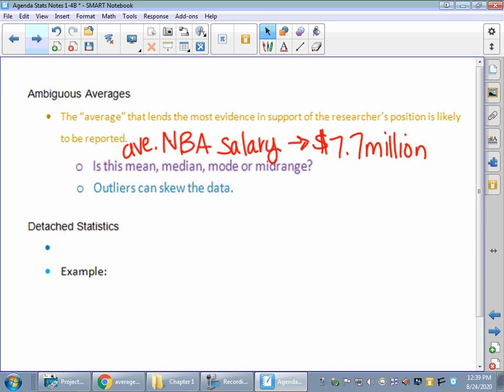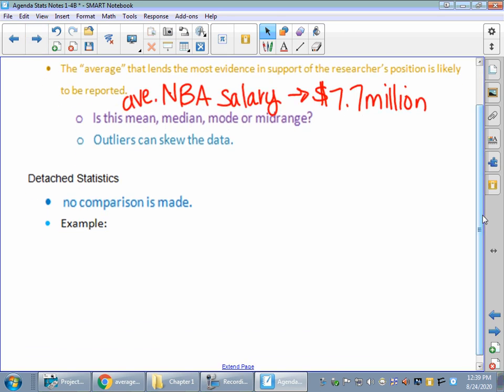Detached statistics are interesting because there's really no comparison. And if you start listening to commercials, you might start noticing something like this. Cookie B has fewer calories. This health drink has more vitamins. Well, more vitamins than what? There is no comparison. It's detached. It's just sitting out there floating. It's implying something, but it's not completing that thought.